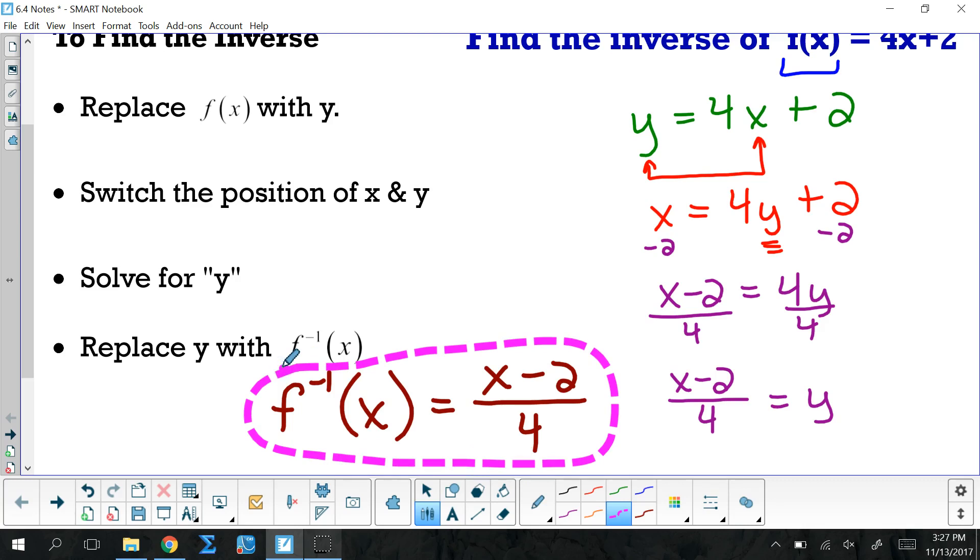Inverses, just like multiplication and division, they cancel each other out. Addition, inverse of addition is subtraction. Inverse of square rooting is squaring. Now we're finding those inverse functions that are going to cancel each other out. We're going to get more into that tomorrow, but right now, we just got to learn how to do it.